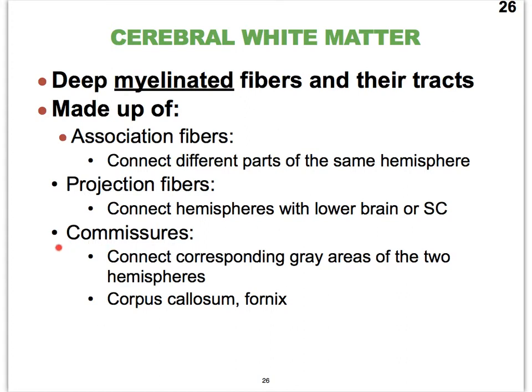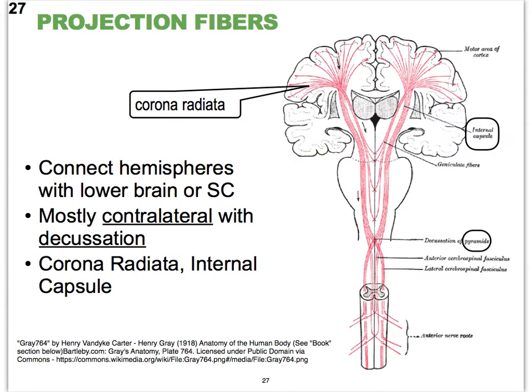Jumping to commissures — commissural fibers are going to be interconnecting the two hemispheres. And finally, projection fibers literally project from the brain into the spinal cord or vice versa. Projection fibers are fibers we'll discuss the most because they allow for communication between the rest of the body and the central nervous system.